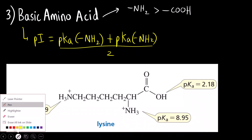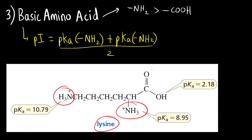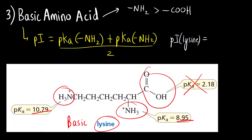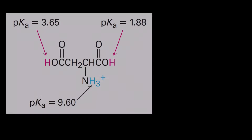The example here is lysine. Lysine has two amine groups and only one carboxylic acid group, so it is a basic amino acid. The isoelectric point for lysine equals the pKa values of the two amine groups added together and divided by 2. The two amine group pKa values are 10.79 and 8.95 — you do not take the carboxylic acid pKa value; that is the mistake to avoid. So: (10.79 + 8.95) / 2 = 9.87. This is the isoelectric point for lysine.